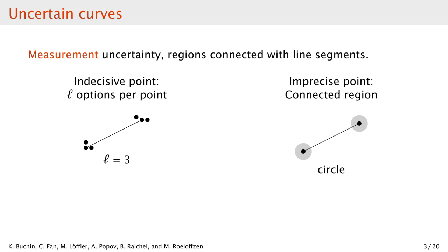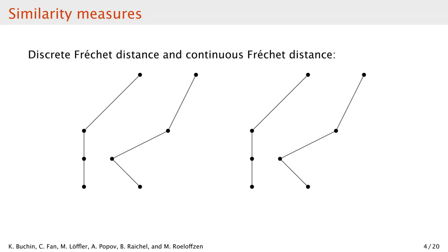Now that we have defined the uncertainty model, let's have a brief refresher on the similarity measure we use. We use Fréchet distance and discrete Fréchet distance. You can think of the discrete version as Fréchet distance restricted to vertices, or as dynamic time warping where you replace summation with taking the maximum.